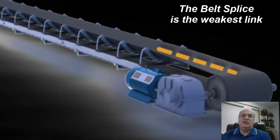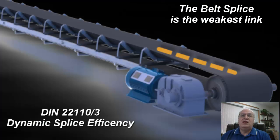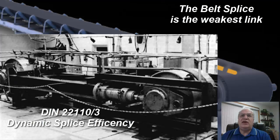The weakest length in the belt is always the splice. And so we need to try to figure out what the strength of the splice is versus the belt strength, or the strength in the virgin belt that comes from the factory. To do this, we're going to use the German DIN 22-110-3, which is a German specification for dynamic splice efficiency in a conveyor belt.